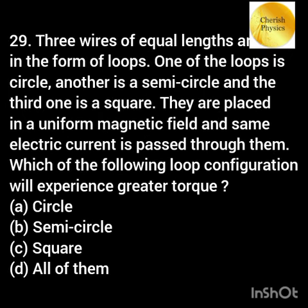Three wires of equal length are bent into a circle, a semicircle and a square. They are placed in a uniform magnetic field and the same electric current is passed through them. Which of the following loop configurations will experience greater torque?